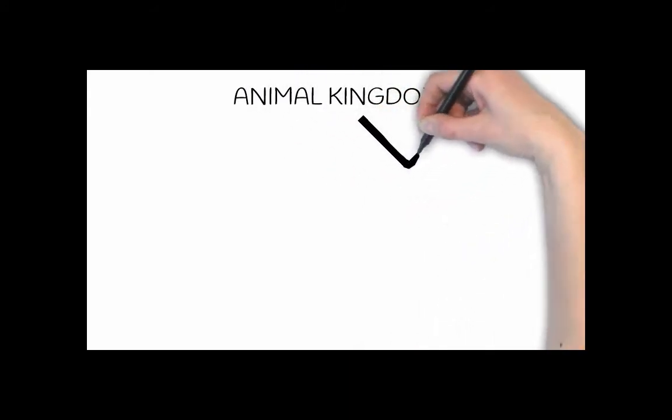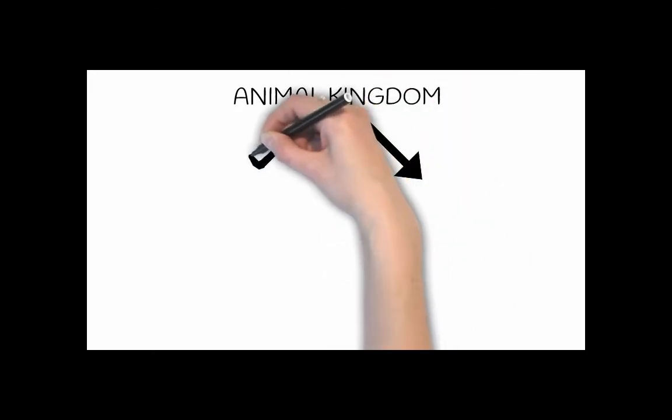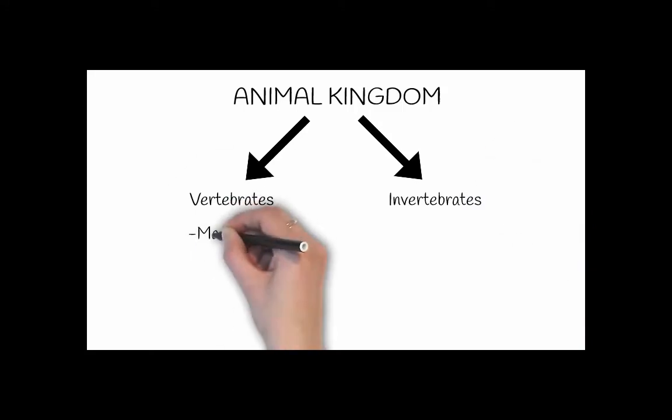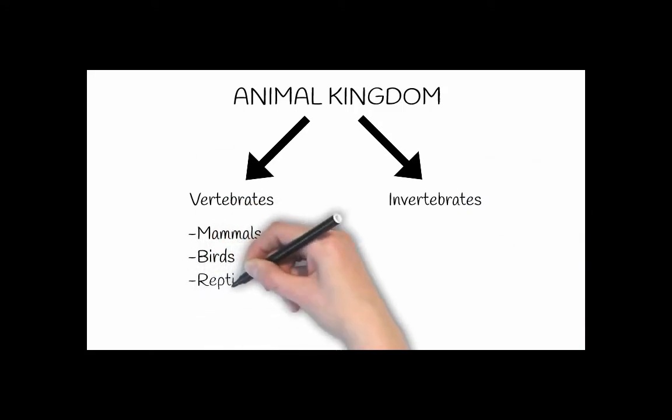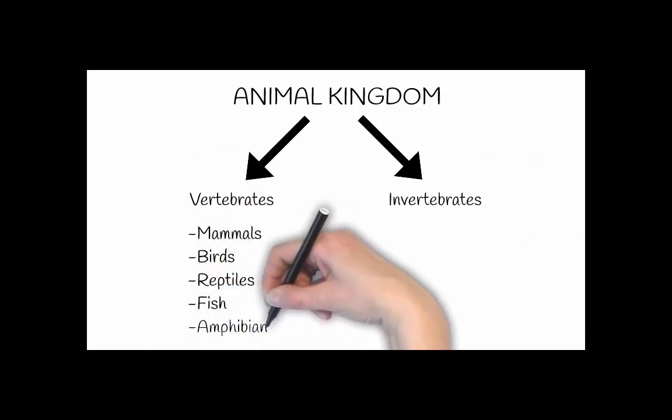So just to recap, the animal kingdom can be further split up into vertebrates and invertebrates. Looking in detail at the vertebrates, there are five main groups: mammals, birds, reptiles, fish, and amphibians. We can classify them based on their distinguishing characteristics.